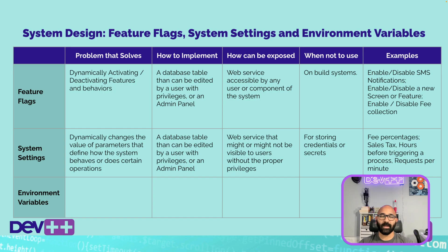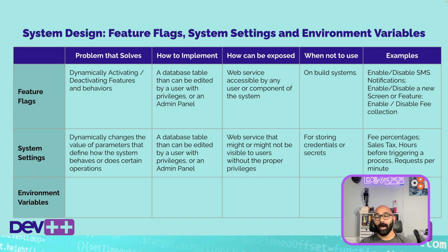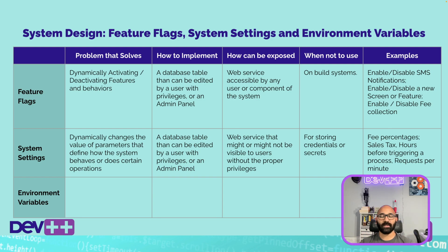You could also have service functions that call this directly from your database. Since these settings don't usually change, it's good to establish a caching layer for faster access. When is it not a good idea? Don't use system settings to store credentials or secrets — it's a bad practice because you add another level of exposure. Some good examples of proper use are: percentages charged on sales tax, hours before enabling a specific feature, time windows between certain activities, and enabling or disabling operations after certain hours like 8 PM, which you can then modify easily.